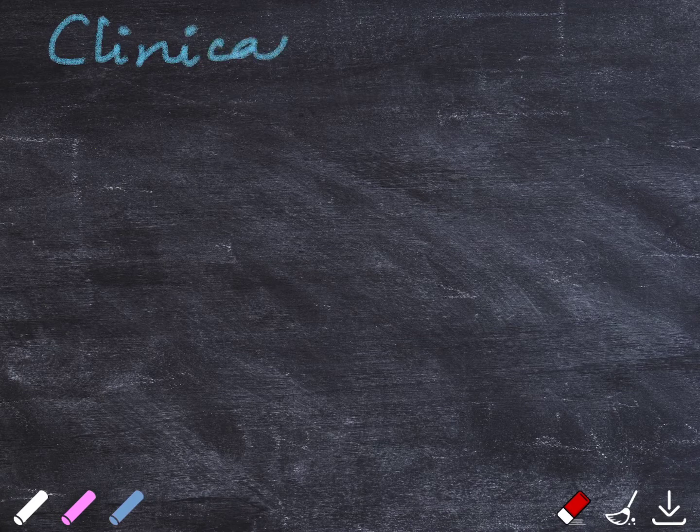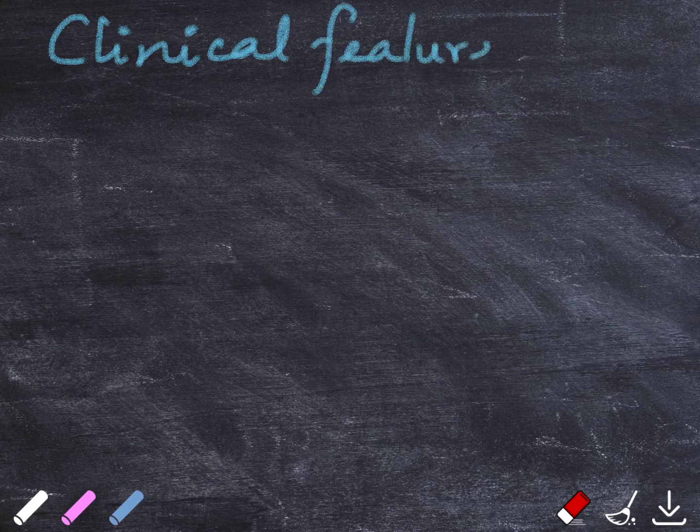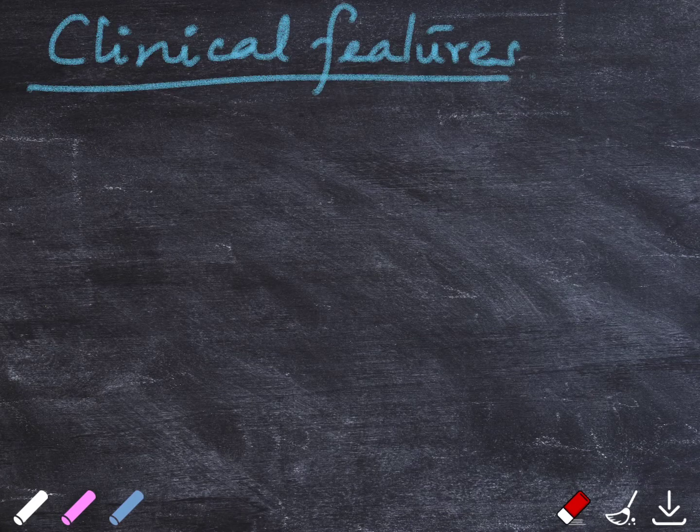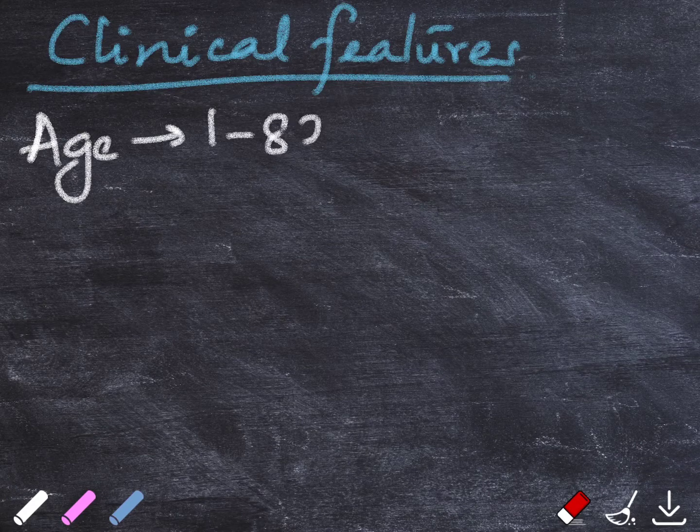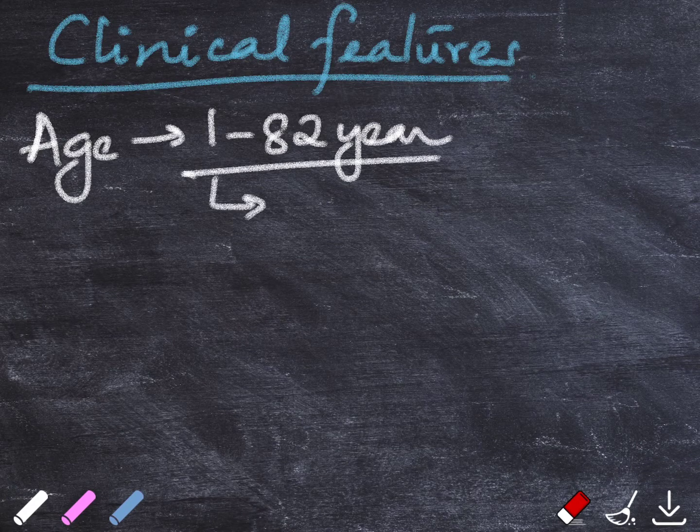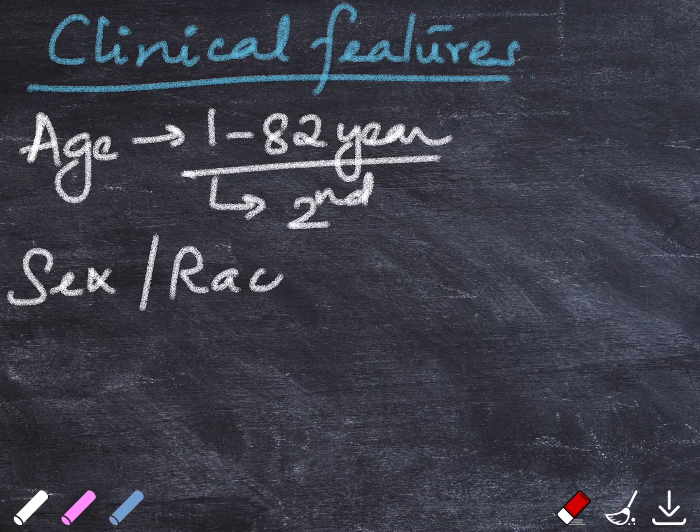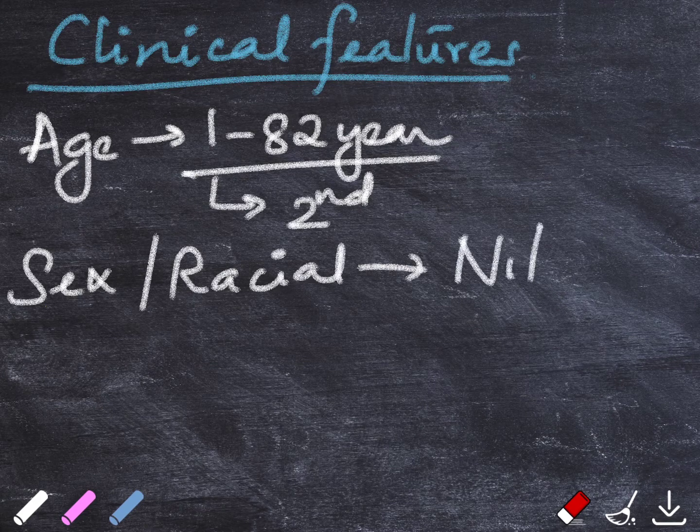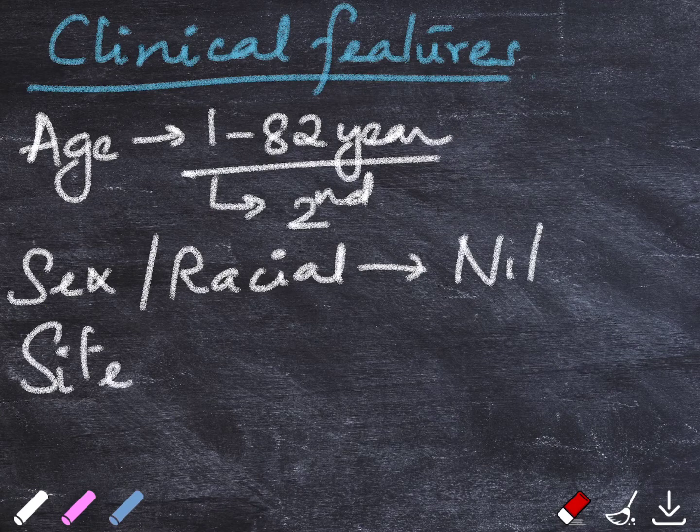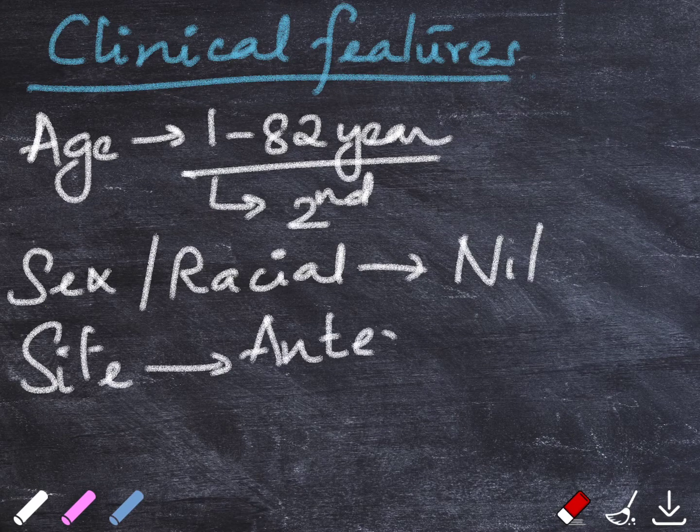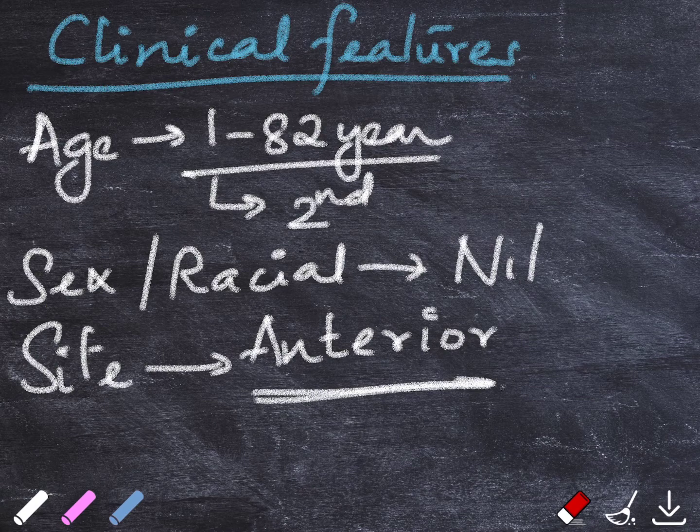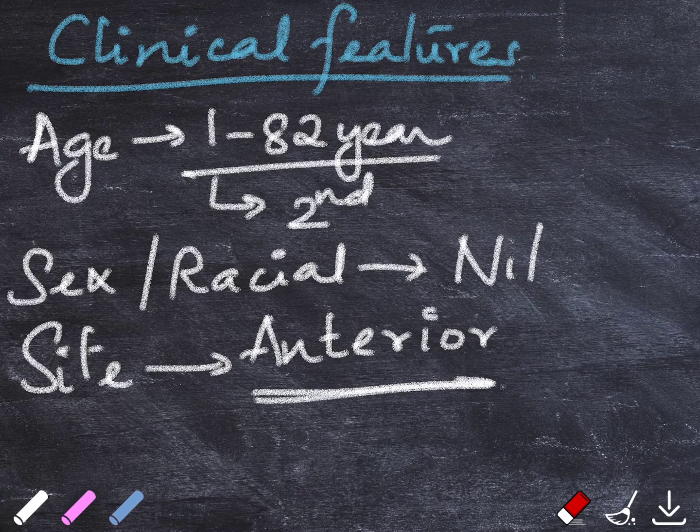Talking about the clinical aspects of this lesion. When we see the age group, it has a wide age group affecting anyone between the age of 1 to 82 years and being more common in the second decade. Sex and racial predilections are not there and the most common site is the anterior jaw with the mandibular lesions often crossing the peripheral midline.